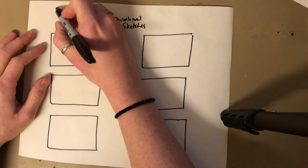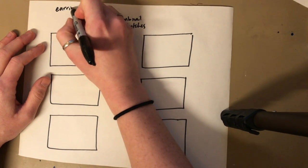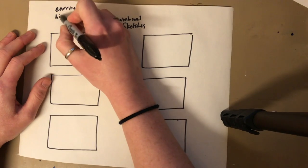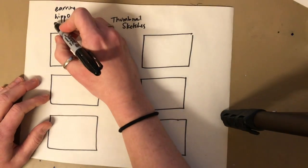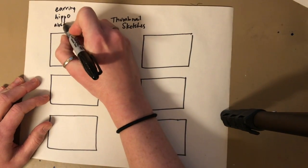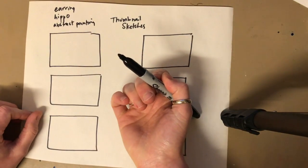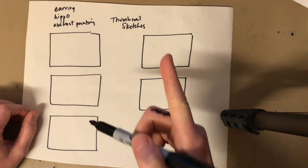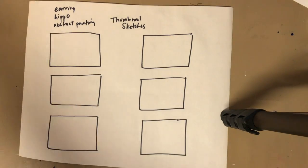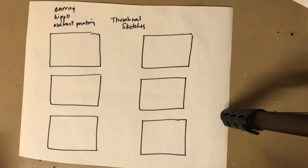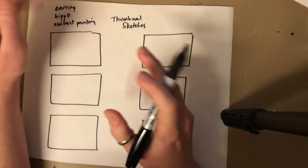So the three artworks that I chose were the earring, the hippo, and the abstract painting. Now I'm using a sharpie here so that you can see what I'm doing but you should really use a pencil so that if you make a mistake you can erase. That's the good part about planning is that this is when to get out all the mistakes.